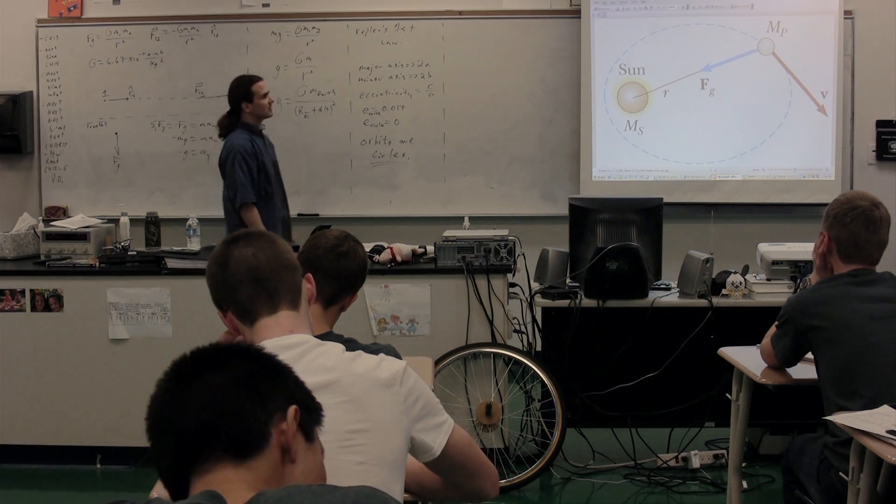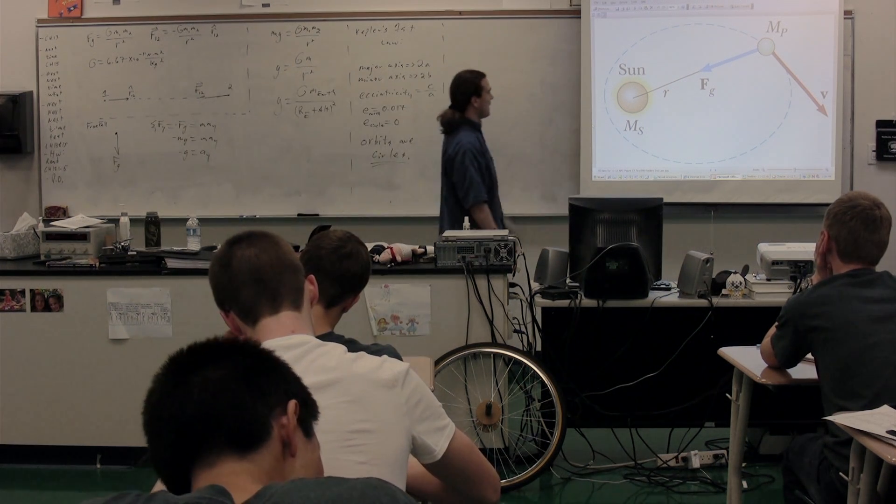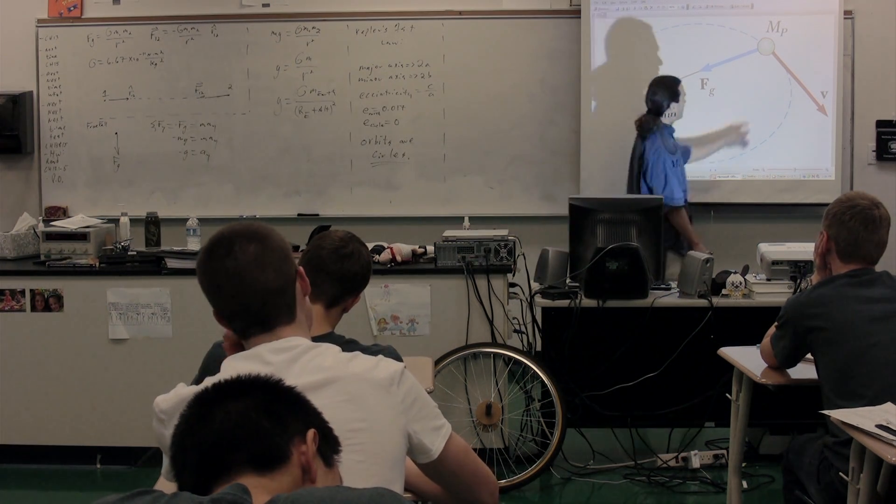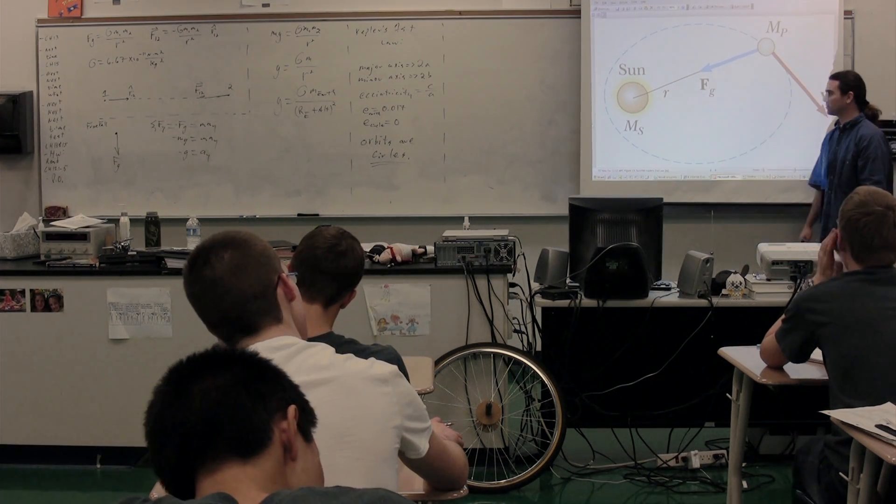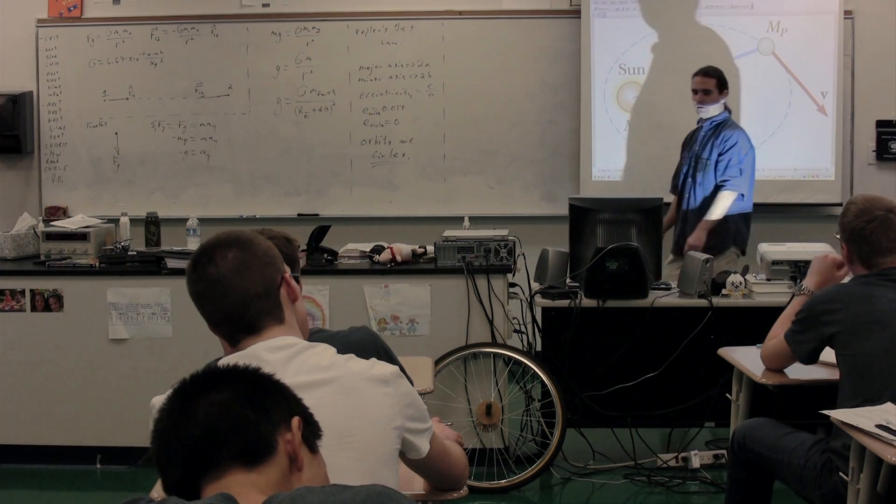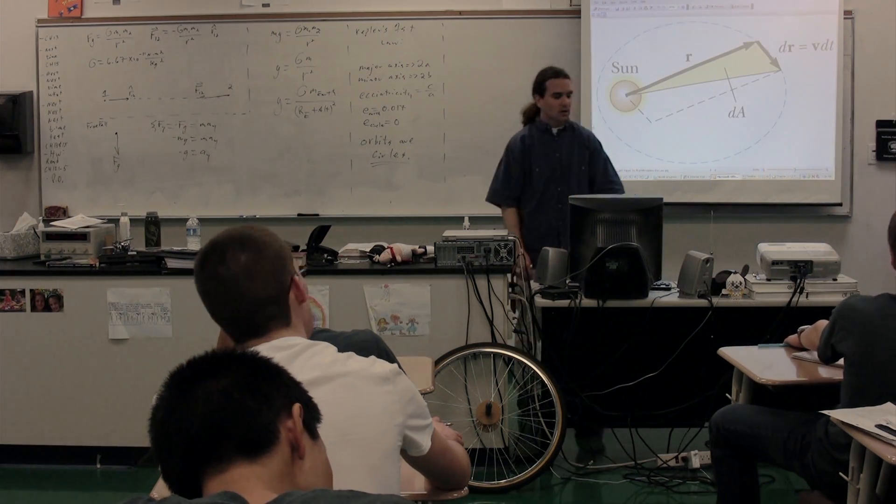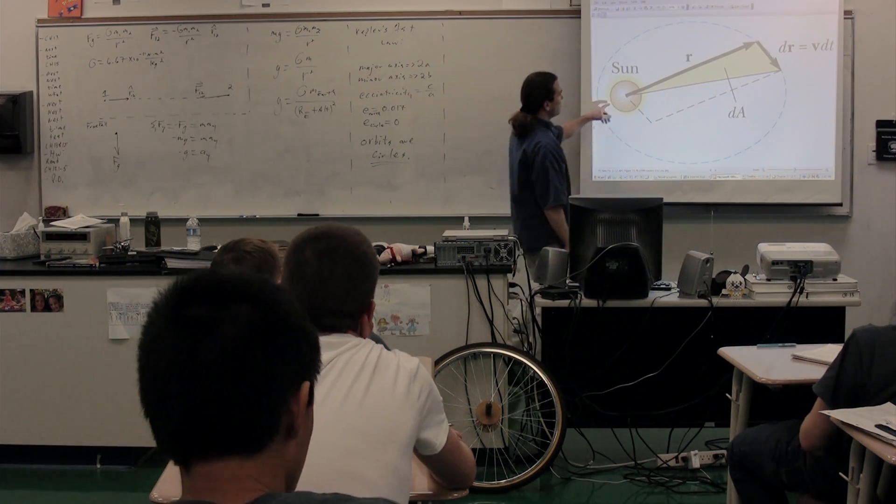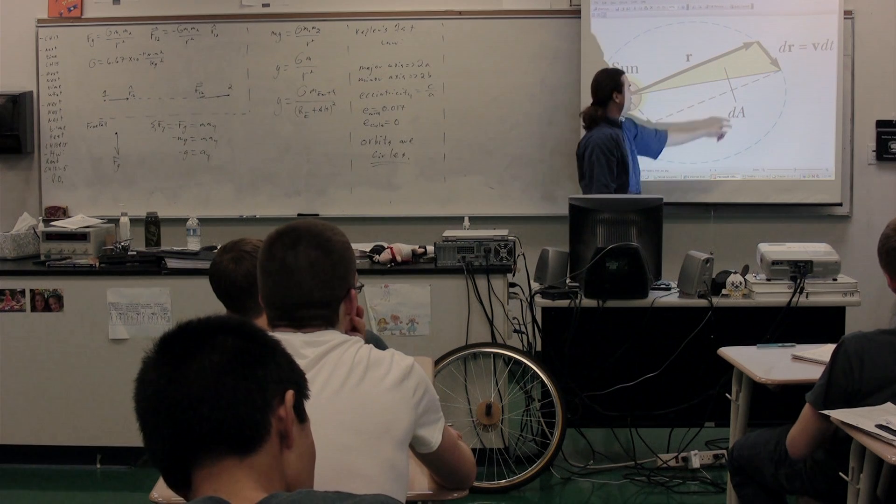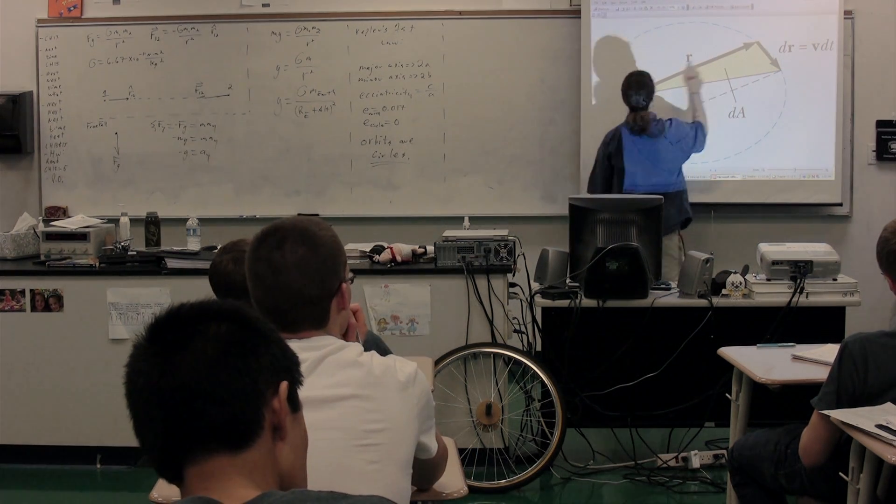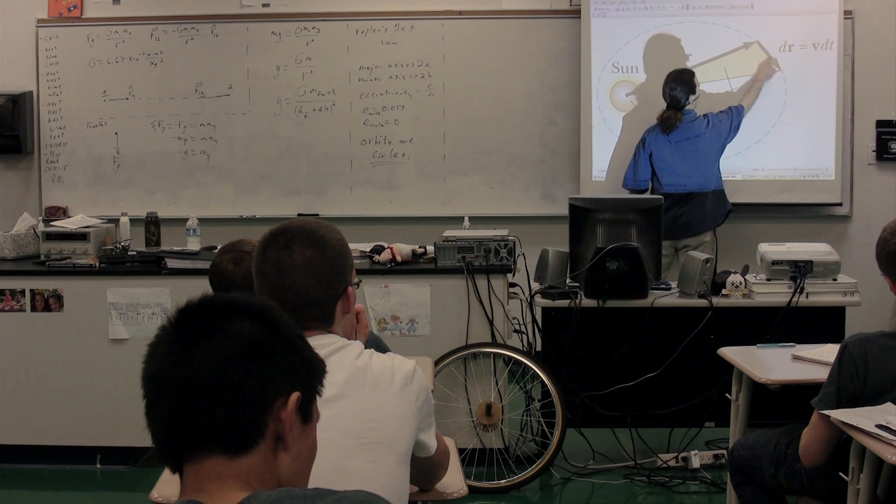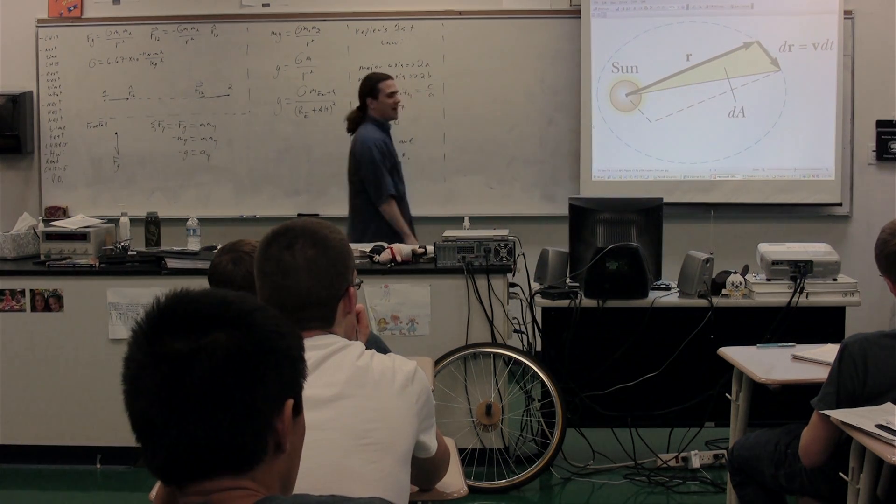Kepler's second law states, if we've got the mass of the planet, we've got the mass of the Sun, this here, the red arrow is the direction of the velocity, this blue arrow is the direction of the force of gravity. Over time, there is going to be an area carved out by the r, the radius, and the distance traveled, the arc length traveled along the path.